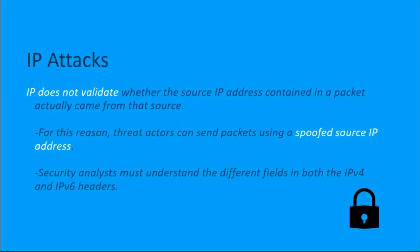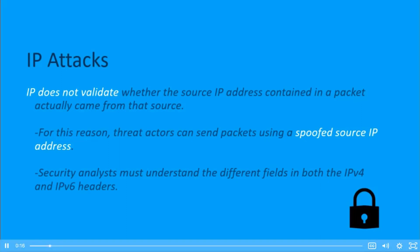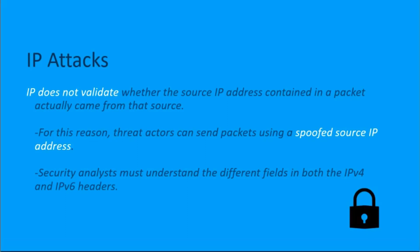Let's get in the mindset of a threat actor and talk about IPv4 and IPv6 attacks, all contained here in IP attacks. IP, or Internet Protocol, does not validate whether the source IP address seen in a packet is actually the legitimate source IP address for that message. Because of this, threat actors can send packets using a spoofed source IP address — they can put whatever source IP they want in the message.